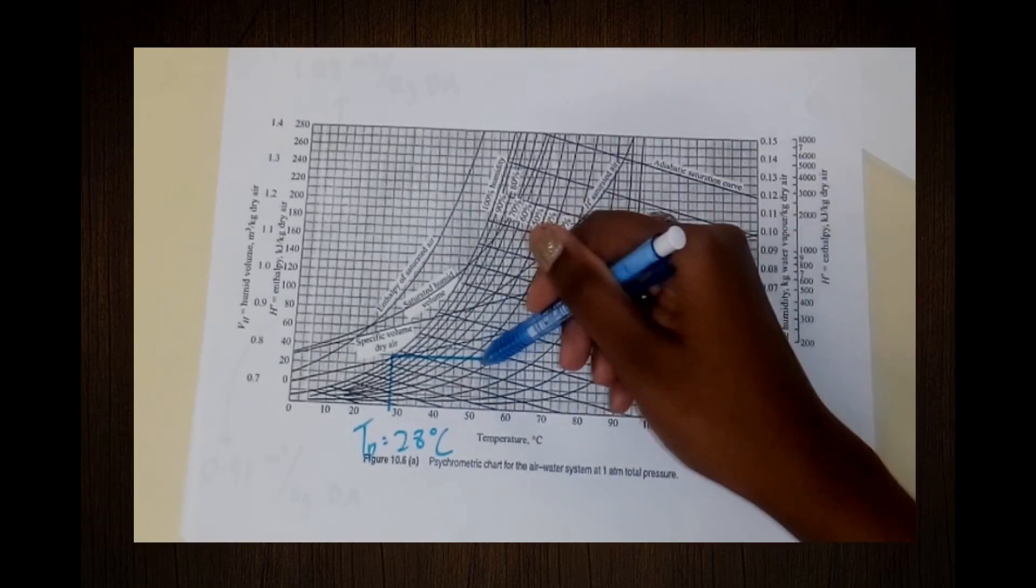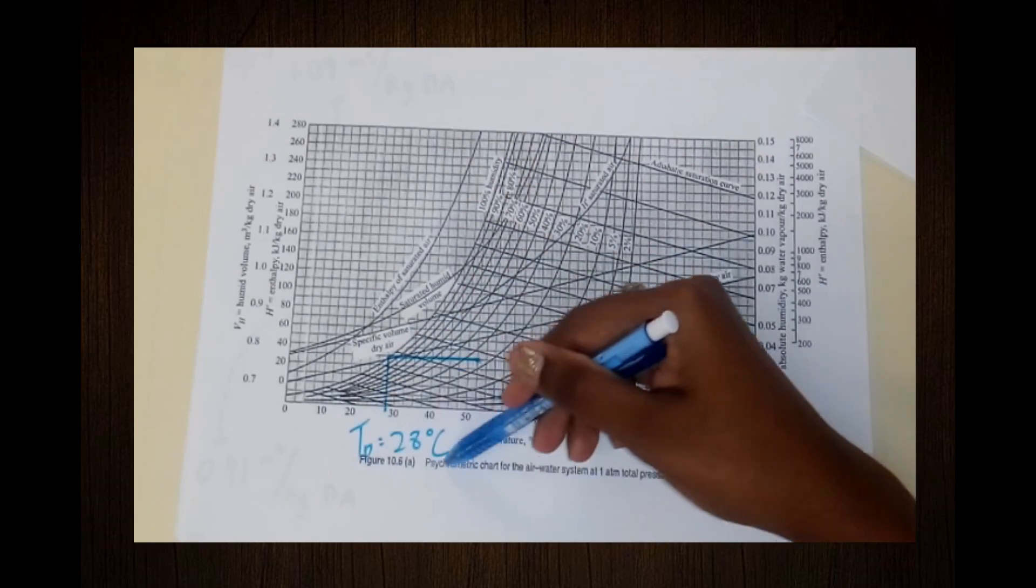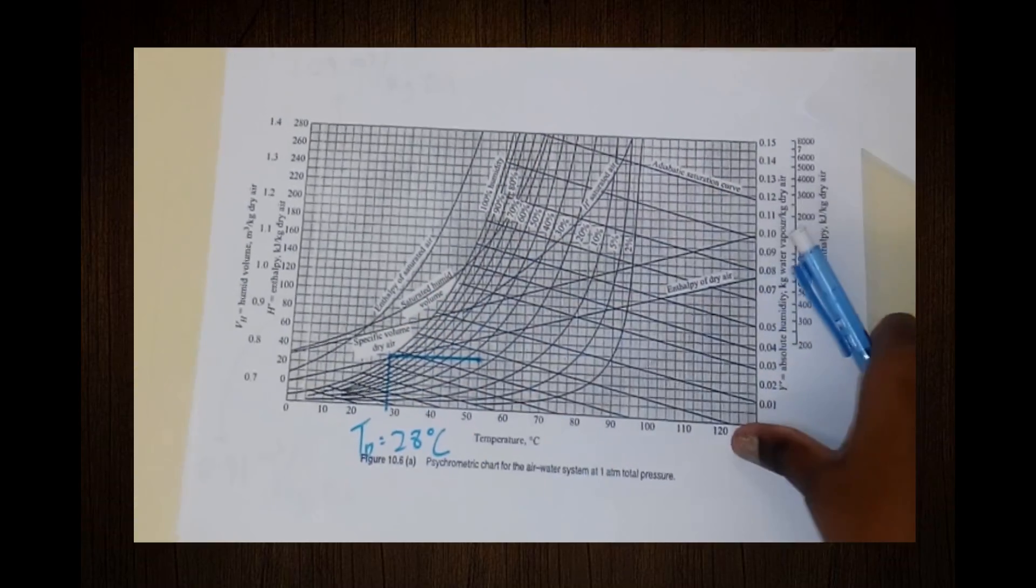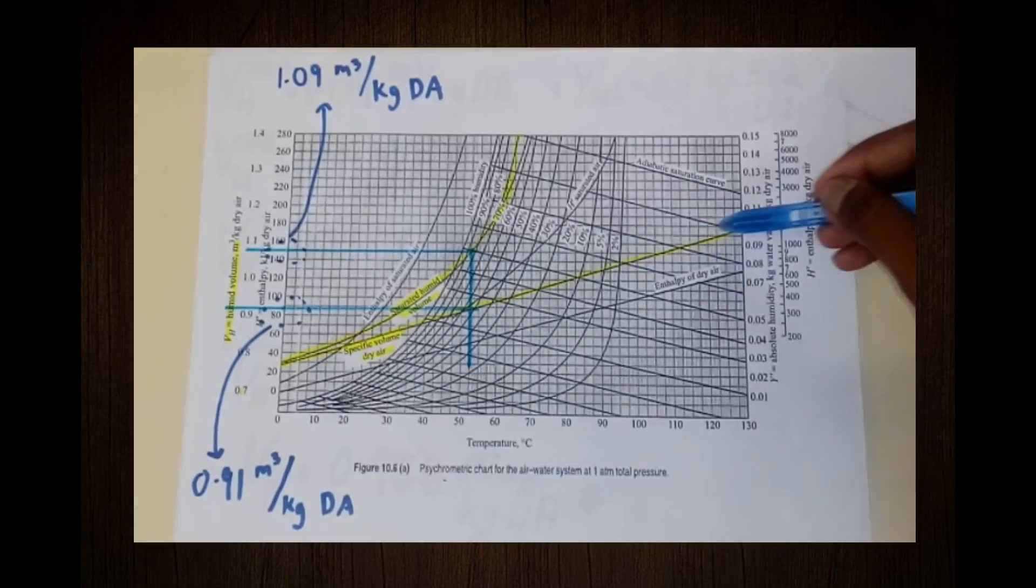Next, we will draw a horizontal line to the left until it reaches the hundred percent humidity line. The corresponding temperature is known as dew point. It is 28 degrees Celsius.